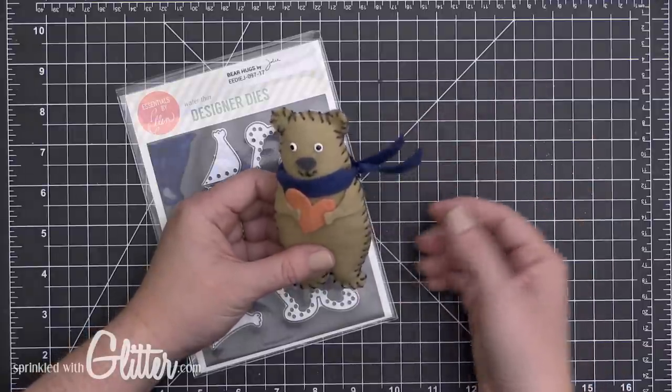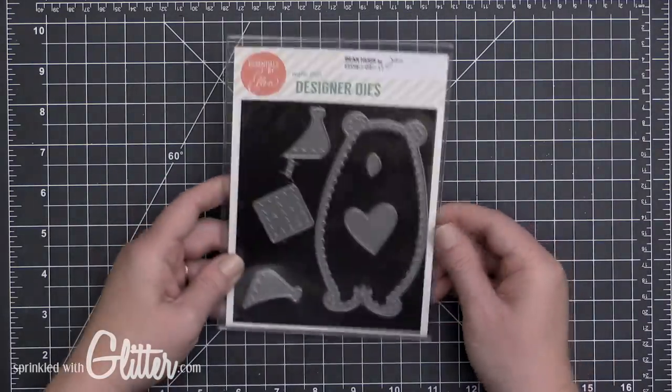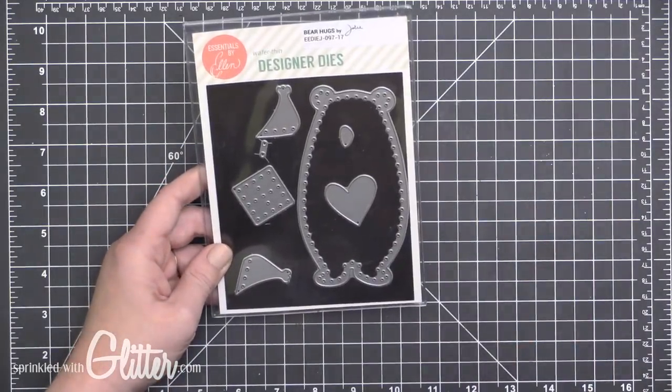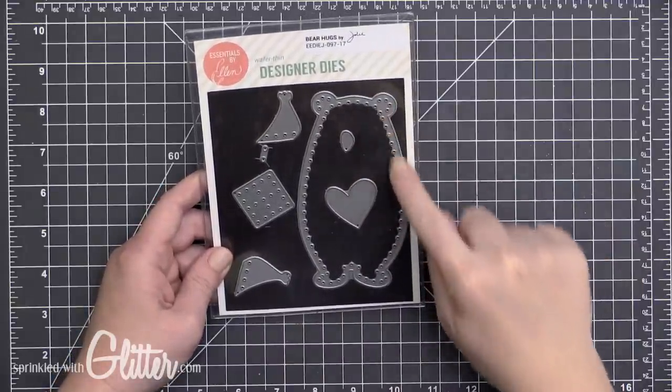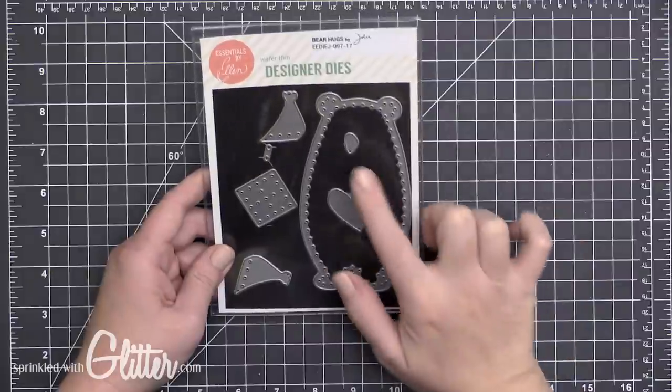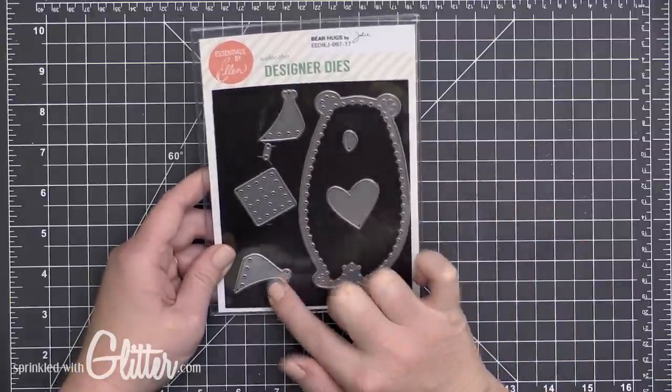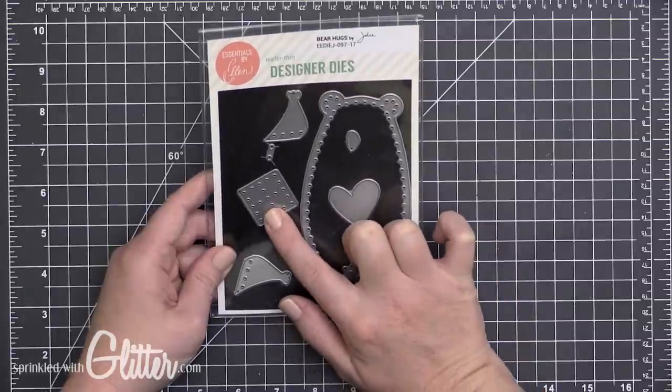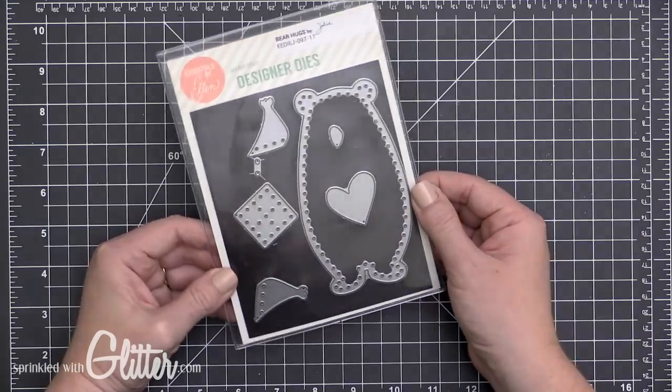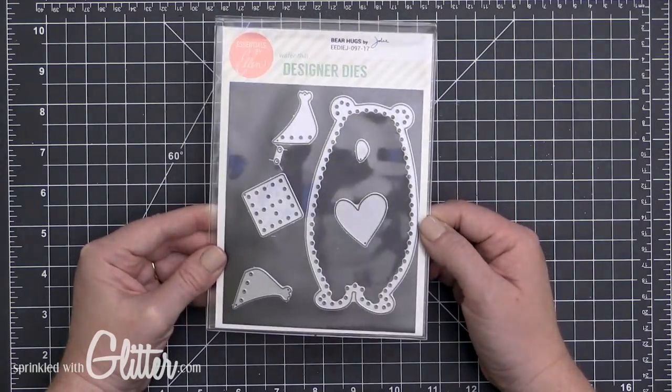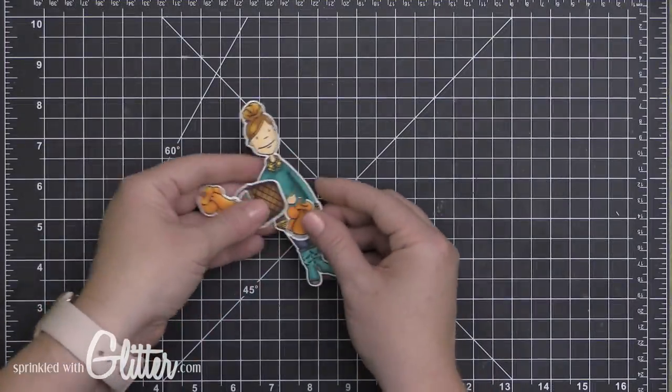I did want to show you the pieces of this die set because I was a little confused myself at first. You have the main image which is the bear, that big image there. Then you have this little piece which is his nose, and then there's the heart to hold and his arms. This here is a little gift package and those two little dots are to make eyes if you choose, or you could use googly eyes or Nuvo drop eyes, which is what I did.